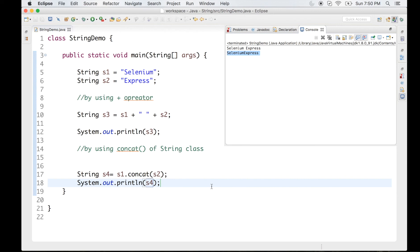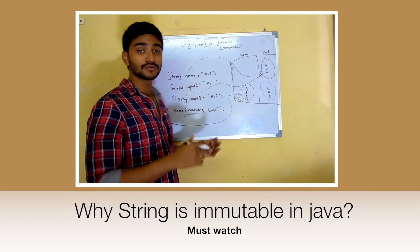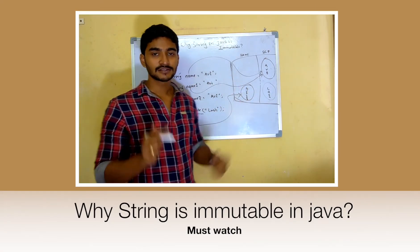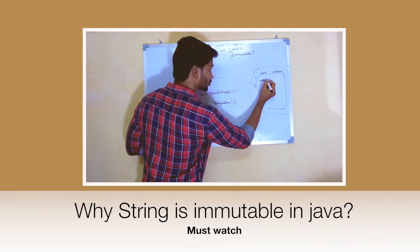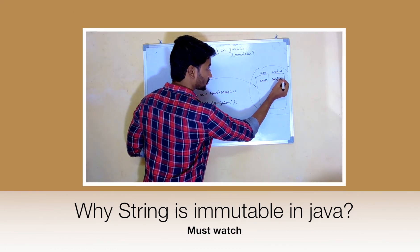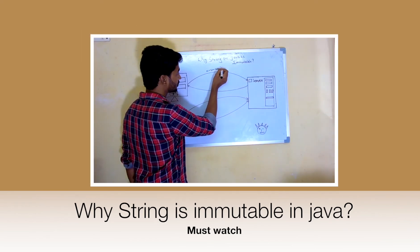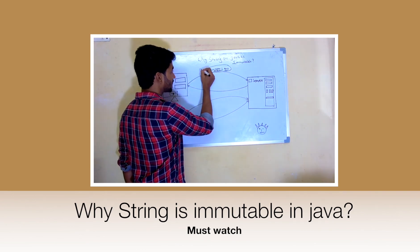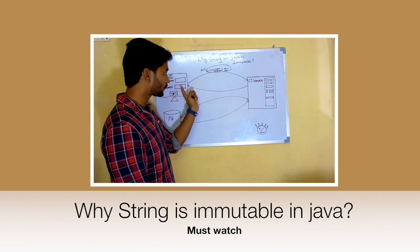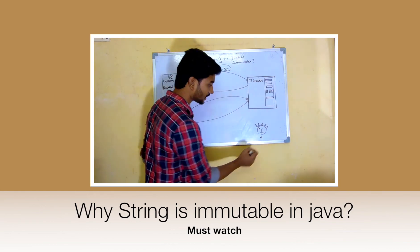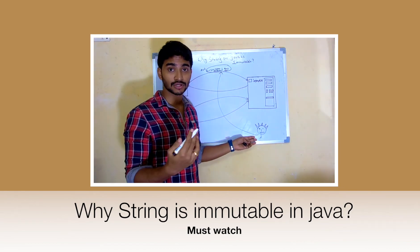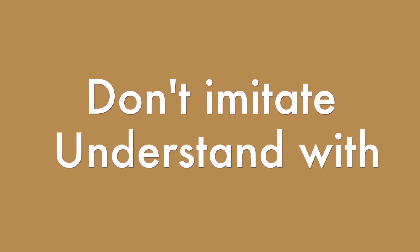Before I wrap up, I want to mention that you can add a string with a number, a double, or anything — just try those things and let me know in the comments if you have any issues. In the next video I'm going to cover why string is immutable in Java, which has a lot of factors associated with it. It's a very popular interview question, so don't forget to watch that and subscribe to get all the notifications.